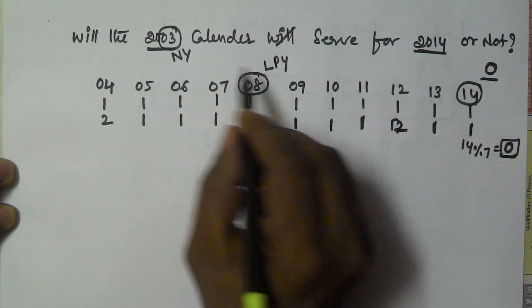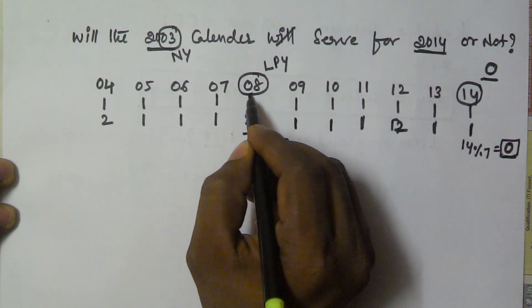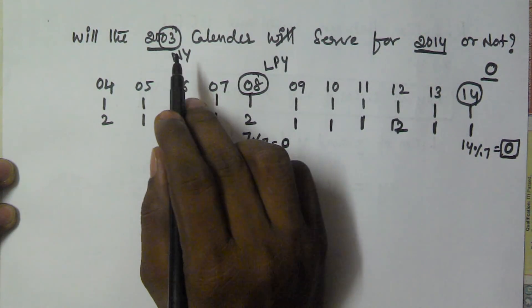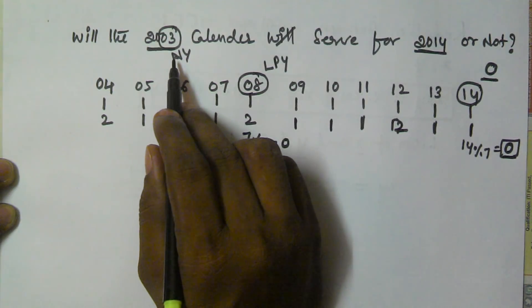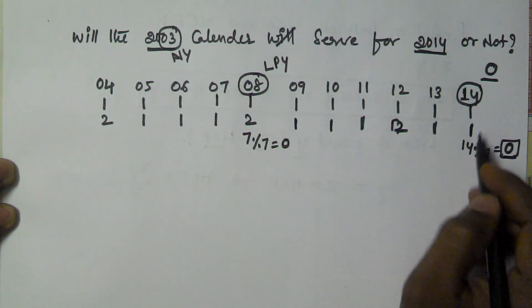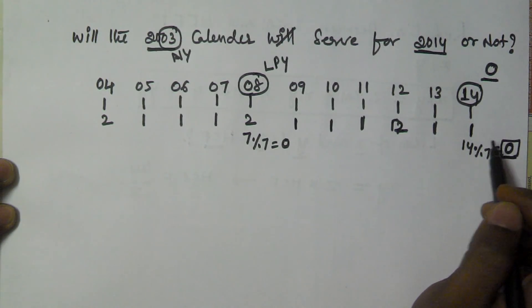The number of odd days from 2003 to 2008 is also 0, but we cannot take 2008 because it is a leap year and 2003 is a normal year. But 2014 is a normal year, and the number of odd days from 2003 to 2014 is 0.